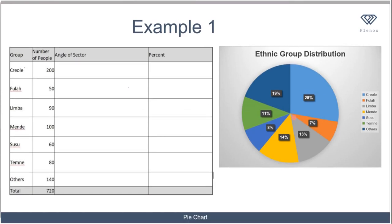First, we prepare a table to calculate the angle of each sector. If you remember our formula, the degree for each item equals the item's frequency over the total frequency times 360 degrees. In this case, the sum of the total frequency is 720.